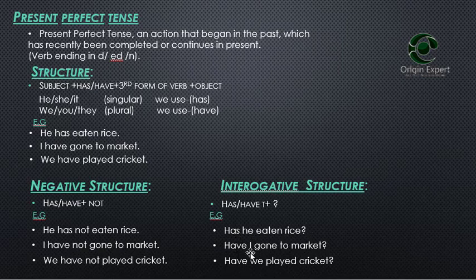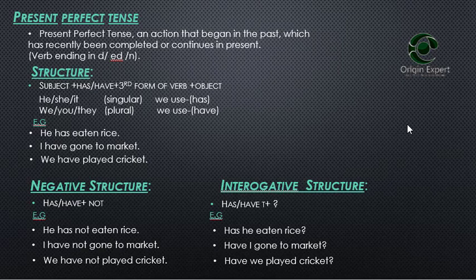For interrogative sentences: Have we played cricket? Has he eaten rice? So this was our short lesson on present perfect tense. I am sure that you will understand. If you don't understand, you can tell me in the comments. We meet next in the present perfect continuous tense, which is the last part.